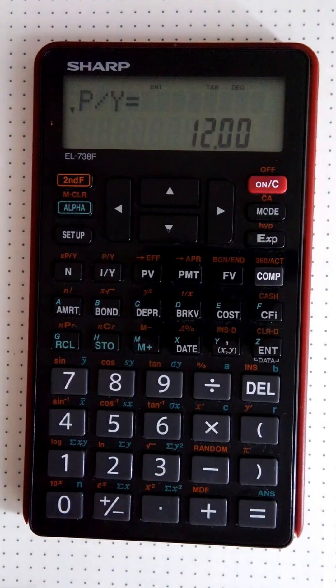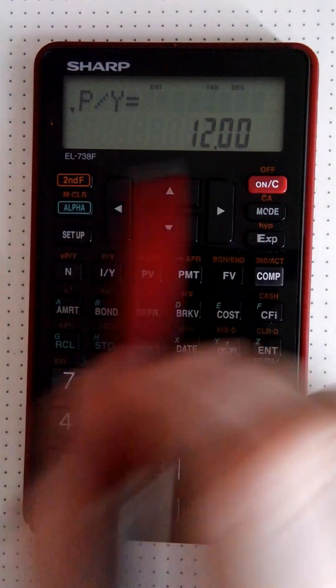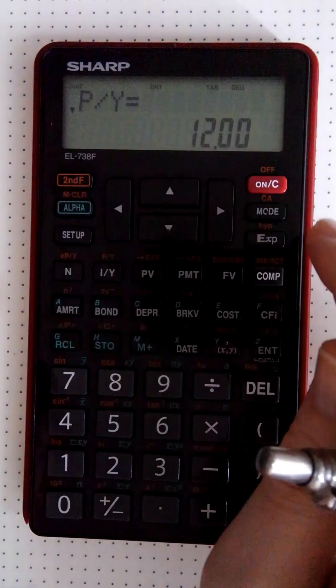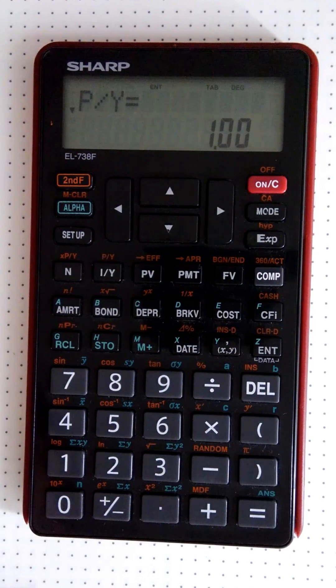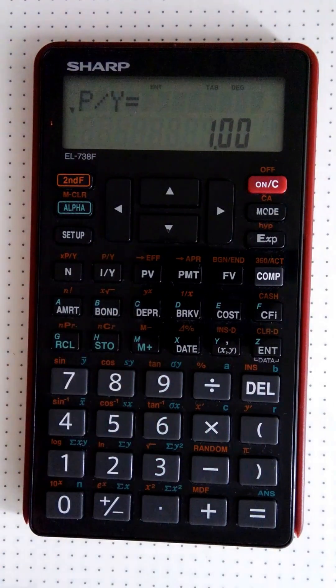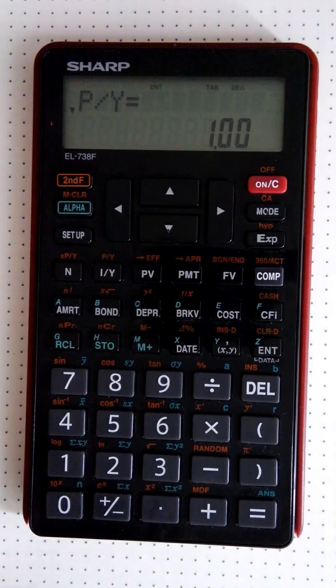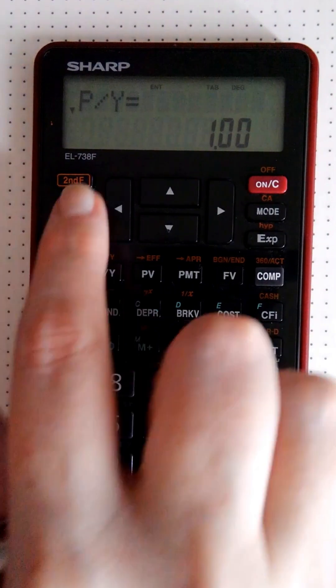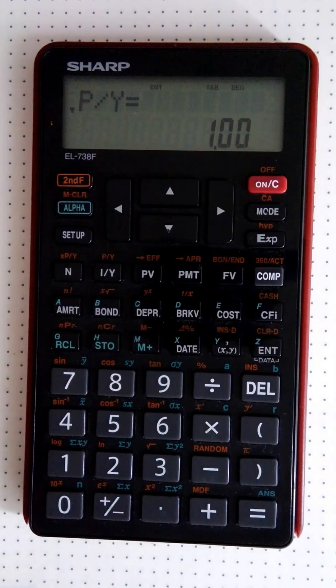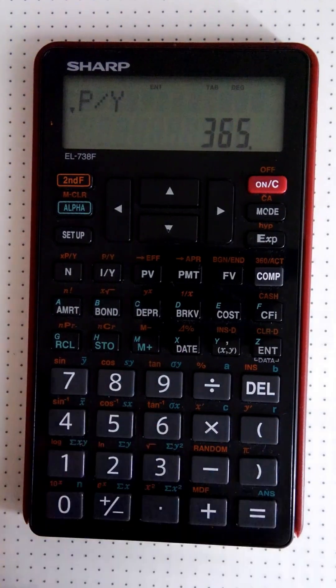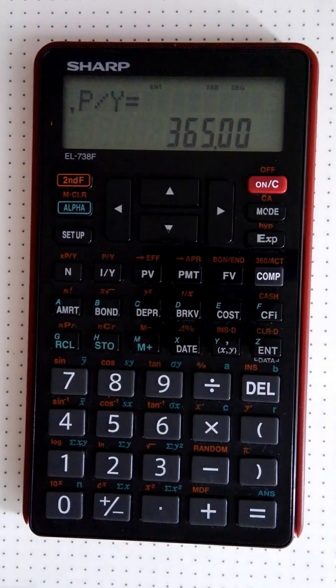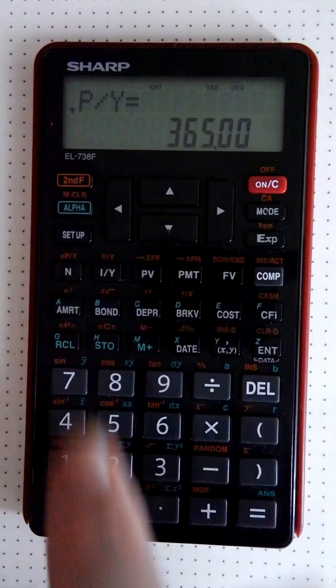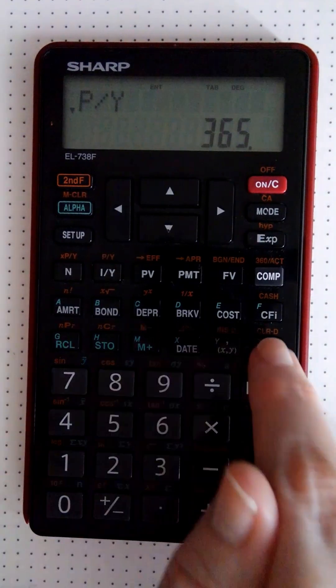And what happens is if we set it in, currently it's set to 12, the default's actually one. So let's just clear our memory. Second function CA. So we've cleared our data, not our variables. So now you see it sitting at one. How do we put in our payment periods and therefore our compounding periods? We'll just type in and say it is daily. So we type in 365 and we push enter. So how did we do that? We said second function PY, we put in our value, we pushed enter.